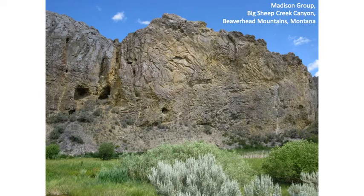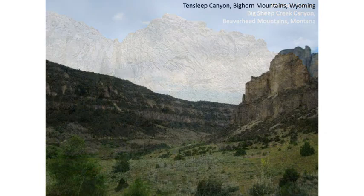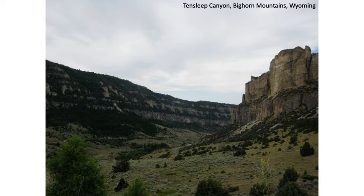Slide 18 shows Tensleep Canyon in the Bighorn Mountains of Wyoming, where the Madison is one of the carbonate units cropping out. The canyon is about 10–15 miles long. The beds are not highly deformed like in the Beaverhead Mountains — they form a conformable succession with some Devonian, and below that some Cambrian and Ordovician. The Silurian is essentially missing here.